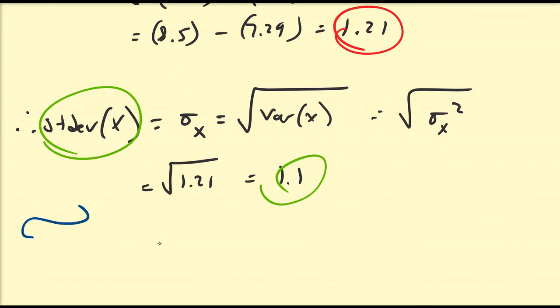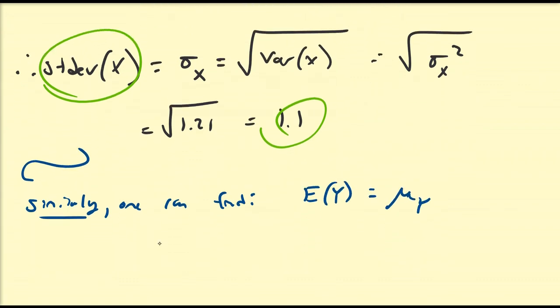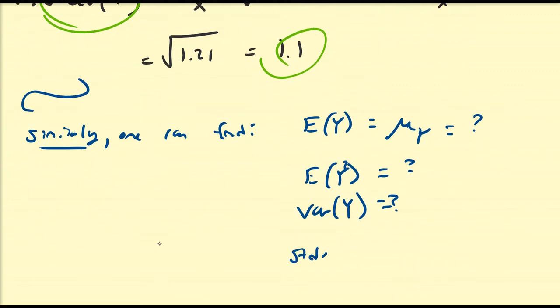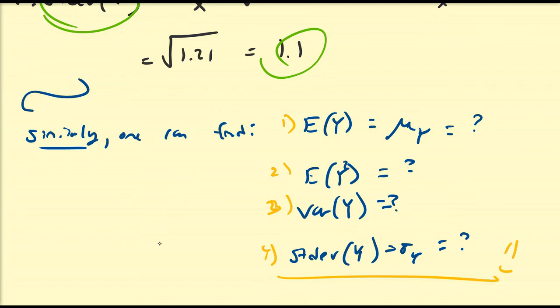Of course, you can do the same for y. Similarly, one can find E[y], the second moment of y, the variance of y, and the standard deviation of y — and I leave those calculations as an exercise. That's a quick overview of joint probability mass functions, how to calculate the marginal PMFs for its variables, and how to calculate the expectation, second moment, variance, and standard deviations of those individual variables as well. Hope you enjoyed.